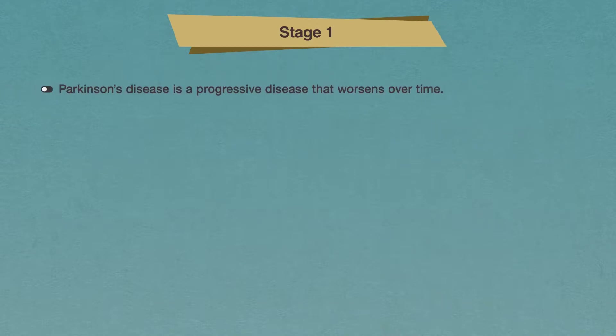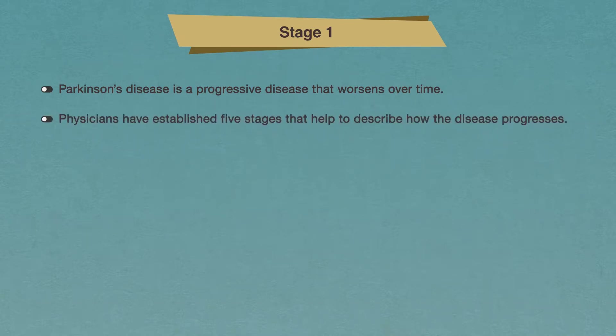Parkinson's disease is a progressive disease that worsens over time. It is a highly individualized disease and affects each person differently. Everyone will not all experience the same symptoms or have symptoms at the same severity. Physicians have established five stages that help to describe how the disease progresses, even though the progression is also different for everyone.